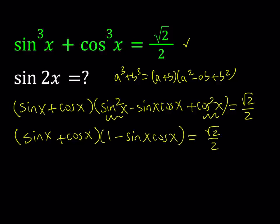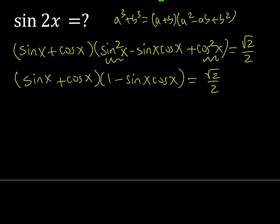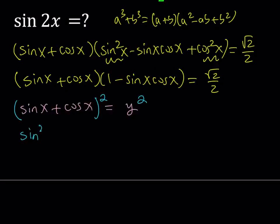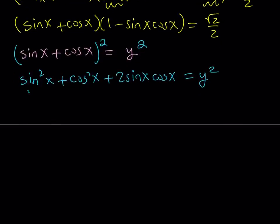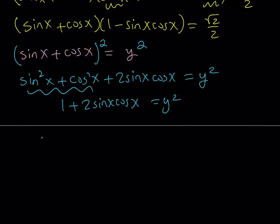We have the sum of sine and cosine and their product, which are related through the Pythagorean formula. For that purpose, let's take sine x plus cosine x and call it y, then square both sides. Squaring gives sine squared x plus cosine squared x plus 2 sine x cosine x equals y squared. Since sine squared plus cosine squared equals 1, this becomes 1 plus 2 sine x cosine x equals y squared. Subtracting 1 and dividing by 2 gives sine x cosine x equals (y squared minus 1) over 2.